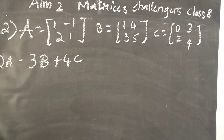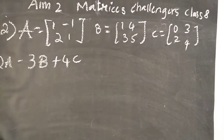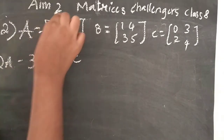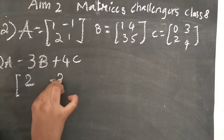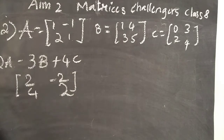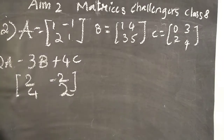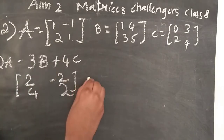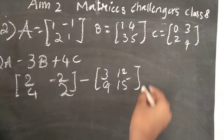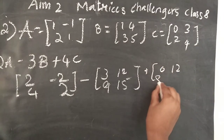We solve everything separately first. But this time I will go directly and fast. 2A gives: 2, minus 2, 4, 2. Then 3B gives: 3, 12, 9, 15. And 4C gives: 0, 12, 8, 16. Do this quickly in your mind — no need to write every intermediate step.